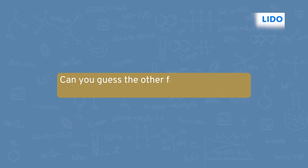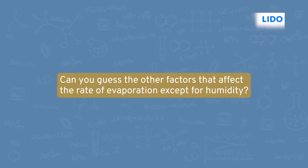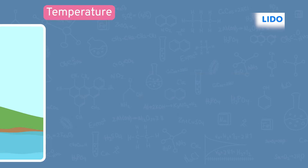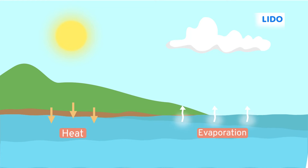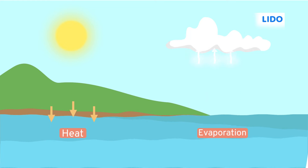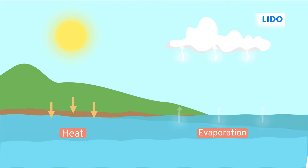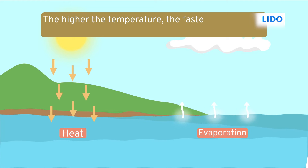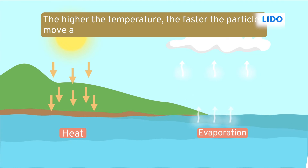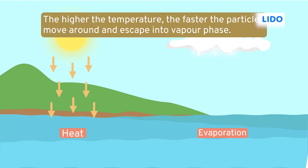Can you guess the other factors that affect the rate of evaporation except for humidity? Yes, temperature and wind. Evaporation happens when a liquid particle gets enough kinetic energy to escape into a gaseous state and ultimately leads to the cooling of the liquid solution. The higher the temperature, the faster the particles move around and escape into vapor phase.